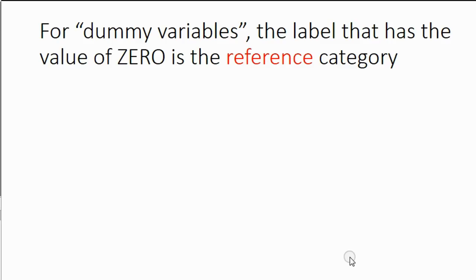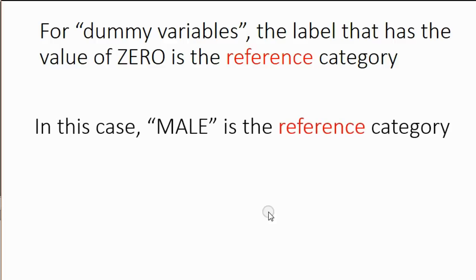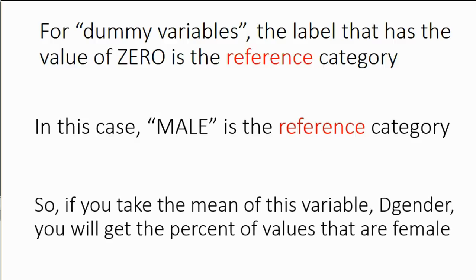Now, for dummy variables, the label that has the value of zero is the reference category. I promise you will learn more clearly in future videos what I mean by the reference category. But in this case, male is the reference category, because male is the item that has the value of zero. So if you take the mean of this new variable DGender, you will get the percent of values that are female.